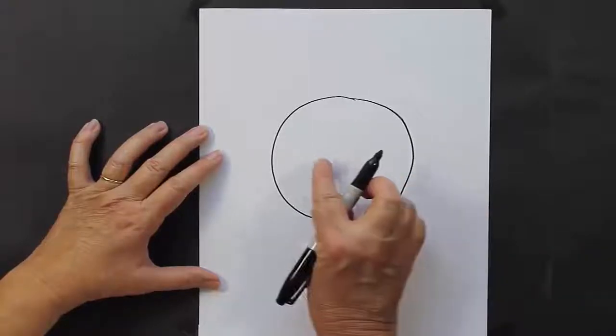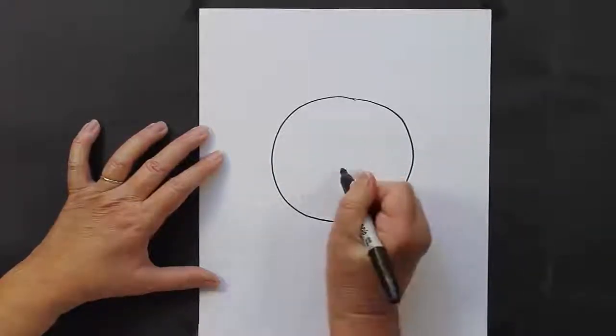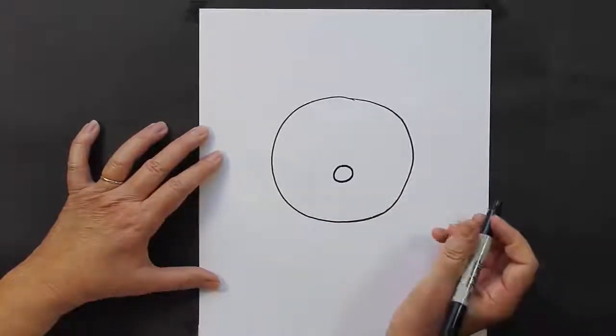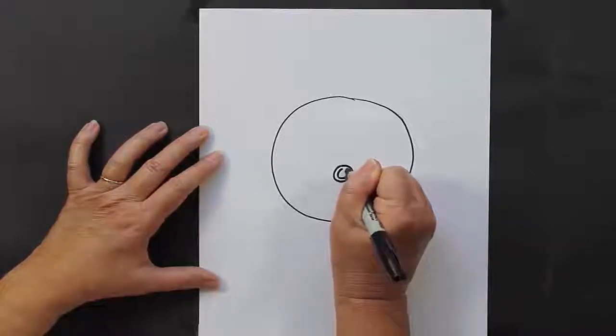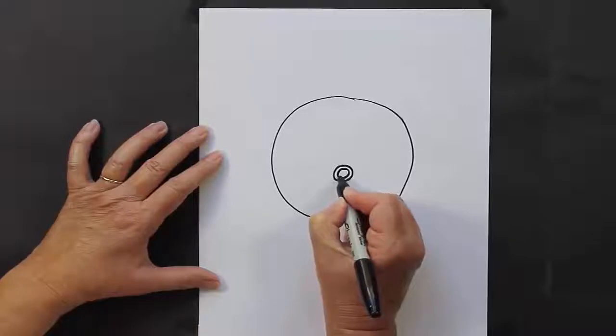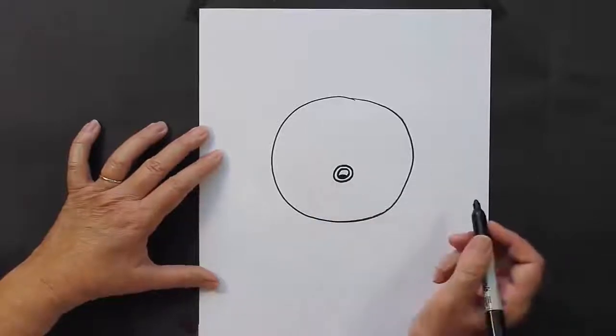Then what we're going to do is you're going to find the middle of your circle and go down just a touch. And you're going to make a smaller circle. Inside that smaller circle, you're going to make an even smaller circle. And then down at the bottom of that smaller circle, you're going to put a little area down here. That's going to be his tongue.